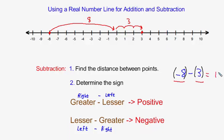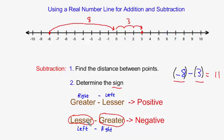So the answer involves the number 11. To determine the sign, I look at whether I took a number on the right minus one on the left, or vice versa. Negative 8 is further to the left, meaning lesser value, and we subtracted 3 which is further to the right, meaning greater value. When you take a lesser value and subtract a greater one, the answer is negative — so my answer is negative 11.